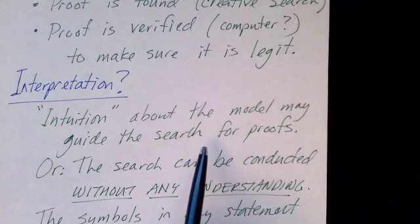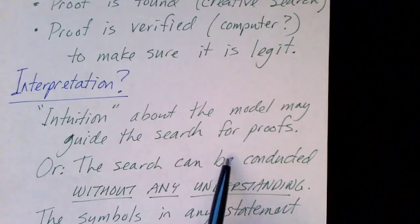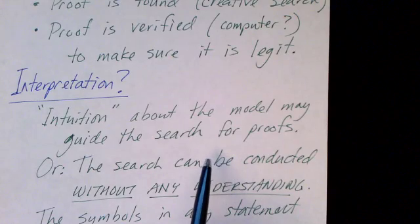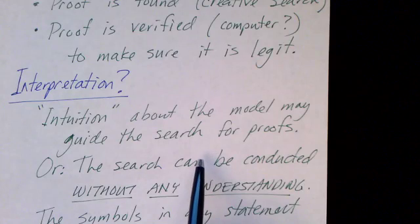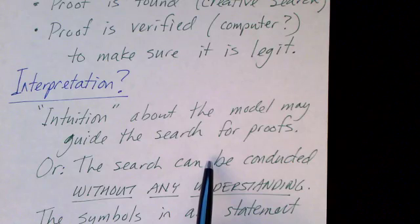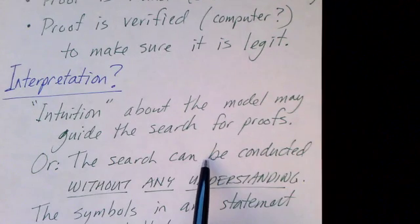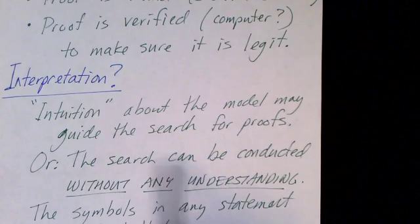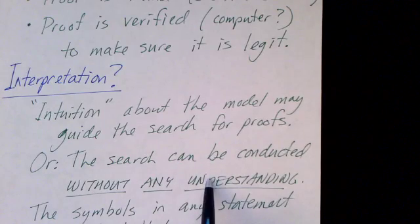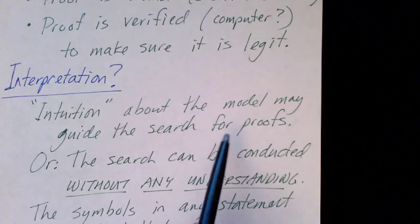But on the other hand, we might conduct the search automatically. We can just consider the statements in the proof to be syntactically correct logical formulas. And we can consider the steps of inference to be nothing more than algebraic manipulations. And so the search can also be conducted without any understanding of what the model is.